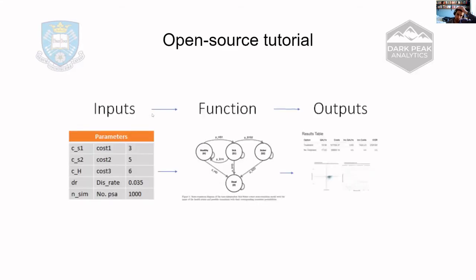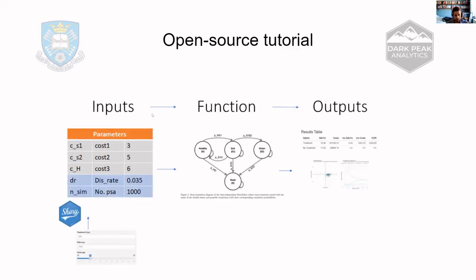As simply as we can think of it, a model constructed in R is a single function. In our paper, we show how you would wrap up your entire model into one function. That function takes a series of inputs — they might be parameters like the cost of different interventions, or the discount rate and number of PSA runs — and all we're going to do is input into those inputs some Shiny sliders and numeric values, then run the model using those inputs and output a series of graphs and tables.